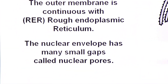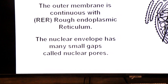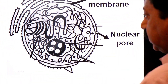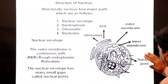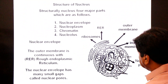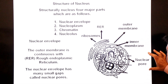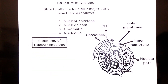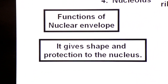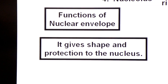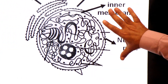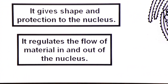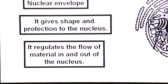The nuclear envelope has many small gaps called nuclear pores, which allow exchange of material in and out of the nucleus. The functions of the nuclear envelope are: first, it gives shape and protection to the nucleus; second, it regulates the flow of material in and out of the nucleus through the nuclear pores.